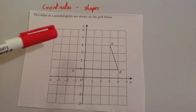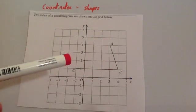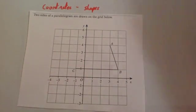Here's a typical question. It says two sides of a parallelogram are drawn in the grid below. So we have got two sides of the parallelogram, A and B. And let's have a look at the question.